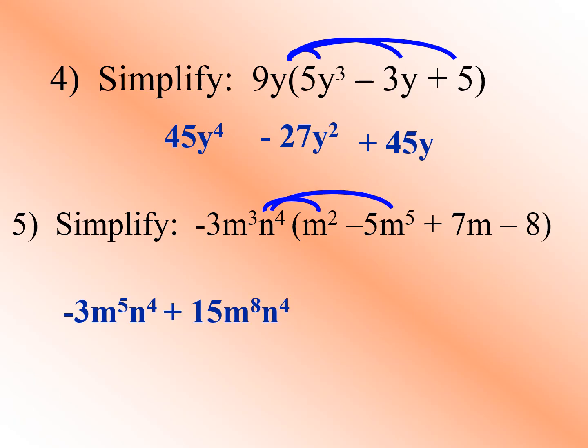Next term: negative 3m³n⁴ times negative 5m⁵. Negative times negative gives us positive. Negative 3 times negative 5 gives us positive 15. Copy variable m, add exponents 3 plus 5 to get 8. Since m⁵ has no variable n, just copy n⁴. So this term is positive 15m⁸n⁴.